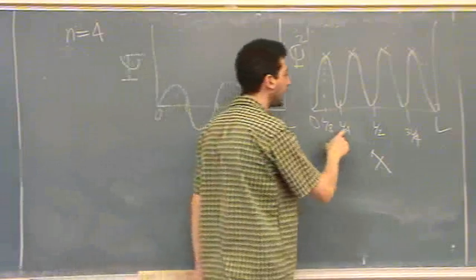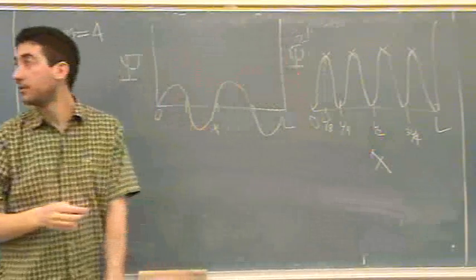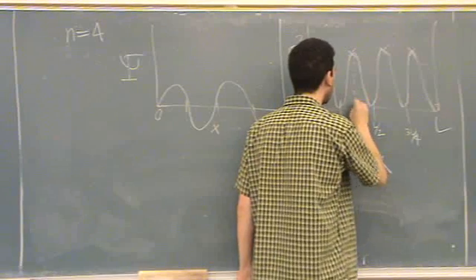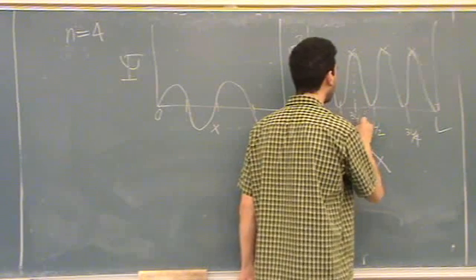What's halfway between L over 4 and L over 2? Three. 3L over 8. So this point right here is 3L over 8.